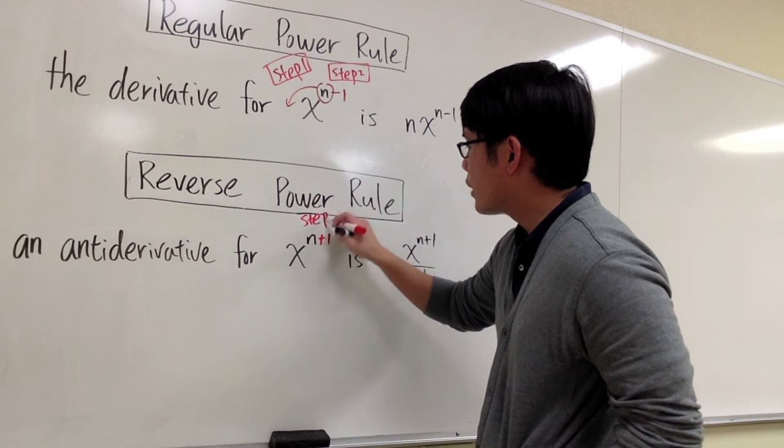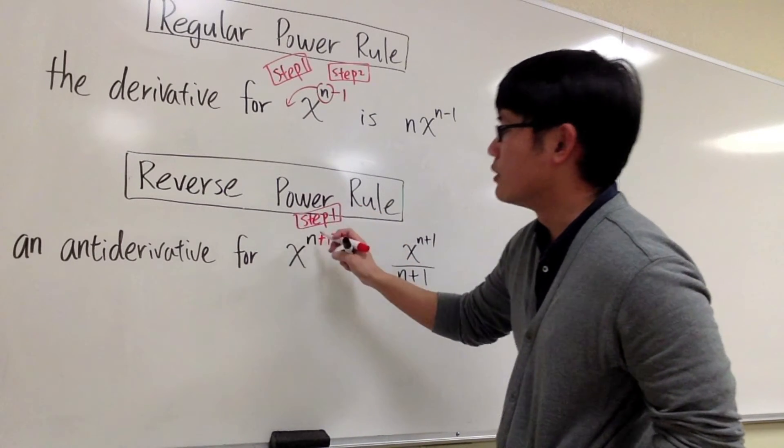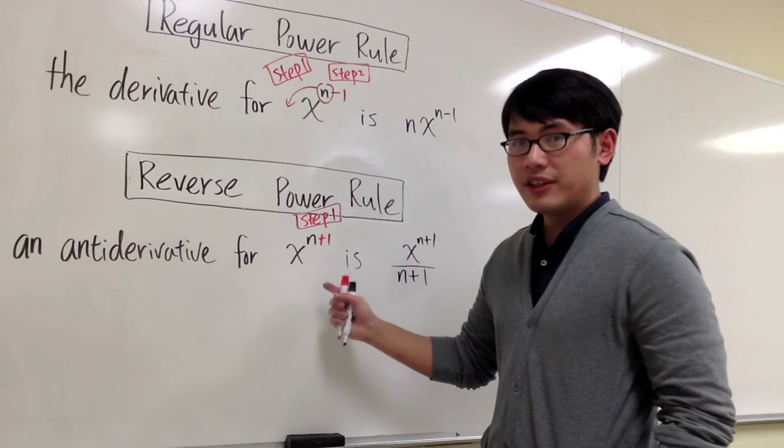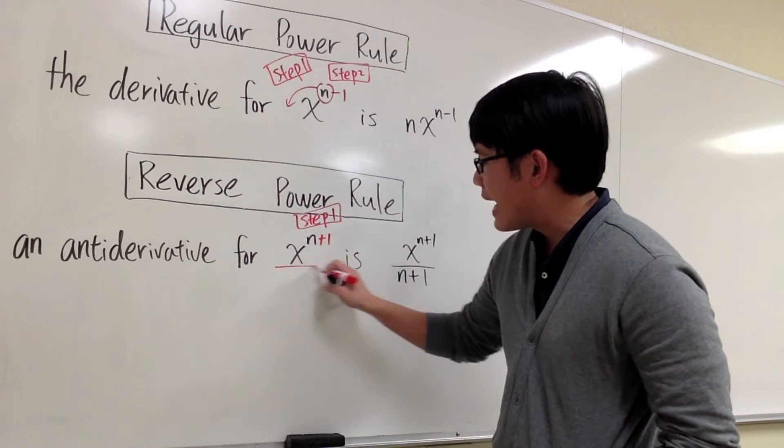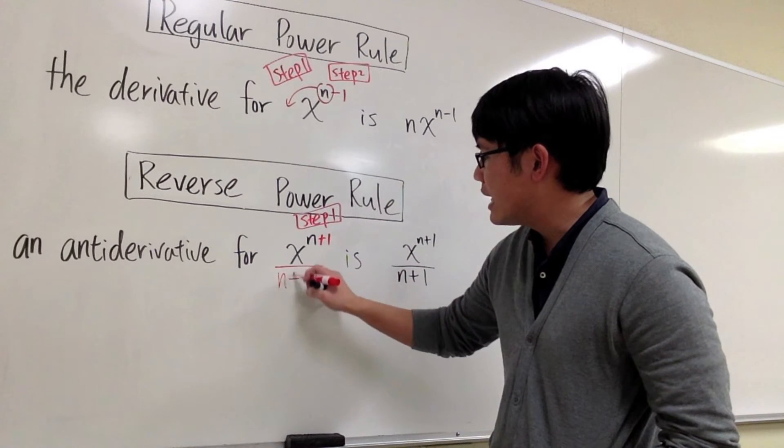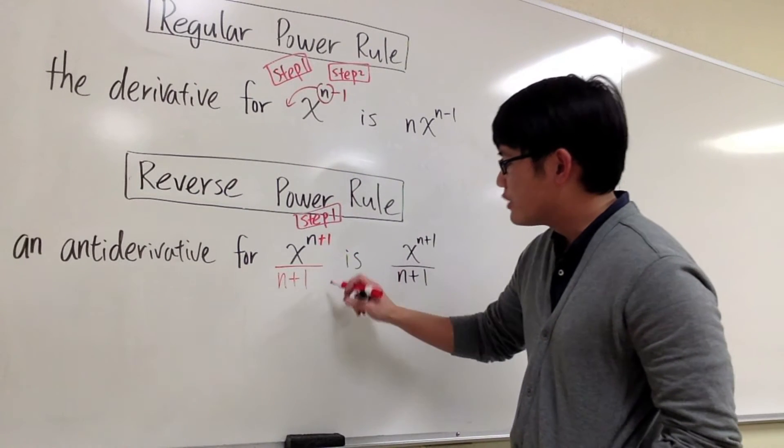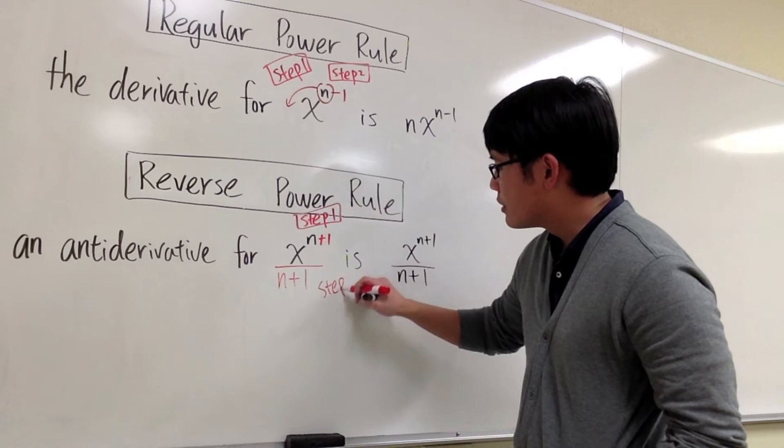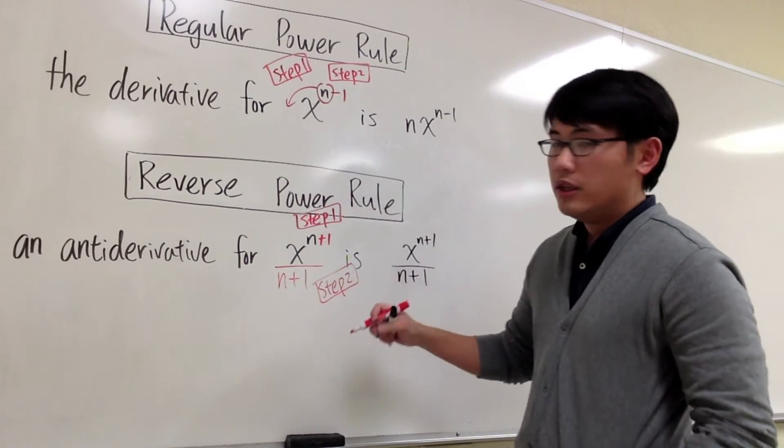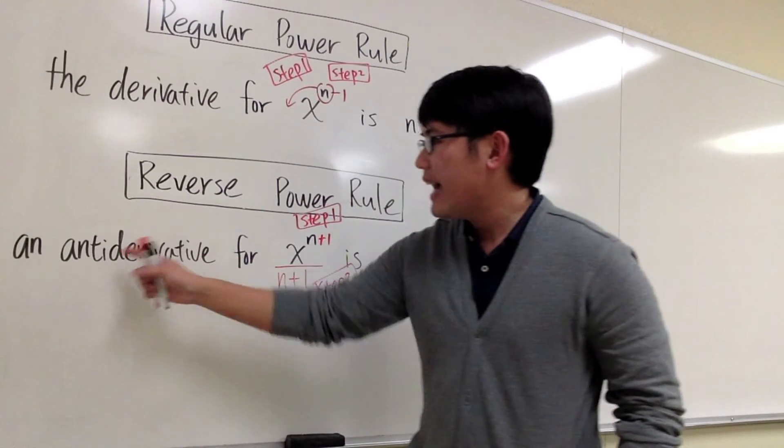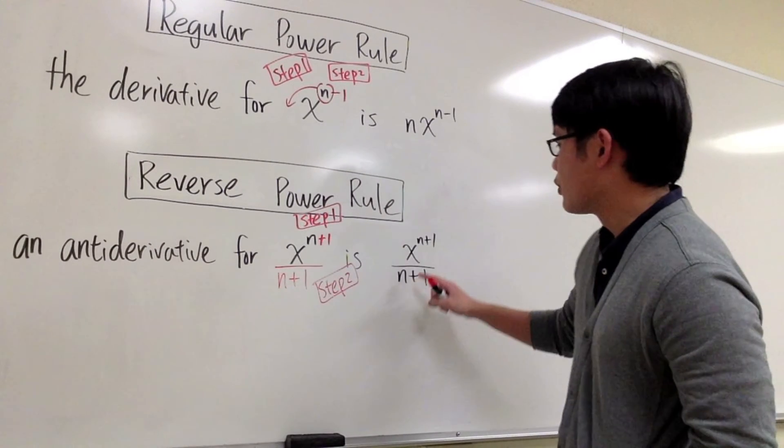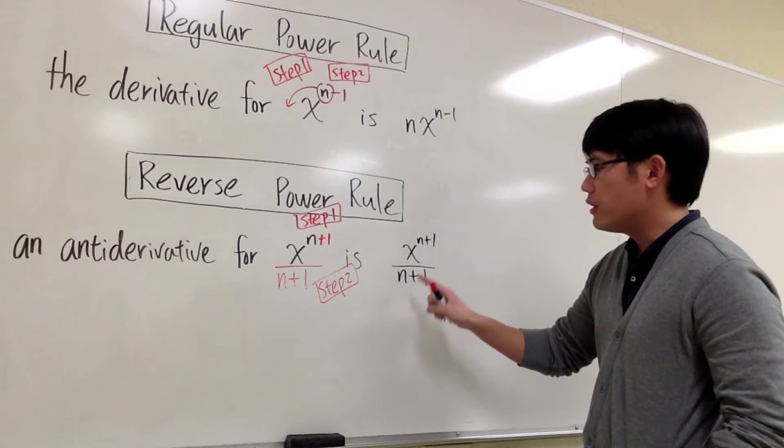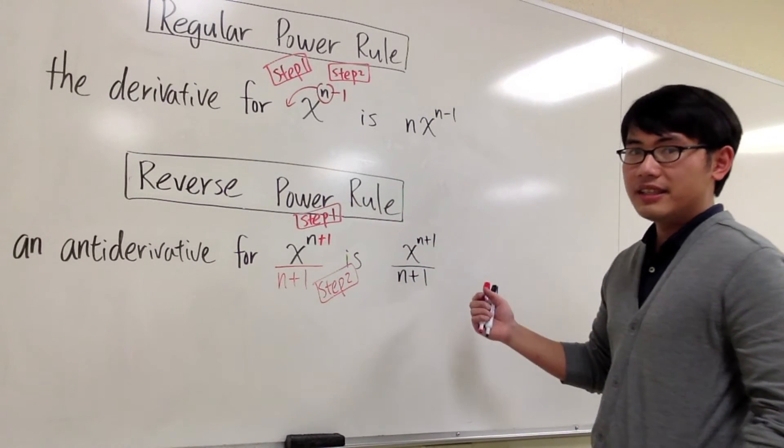it's the first step when you are trying to do the reverse power rule for the anti-derivative. So the next step is, we are going to look at the new exponent and then divide by the new exponent, which is n plus 1. And this right here is step 2. So what we are saying is, an anti-derivative for the function that's in the form x to the n power is going to be x to the n plus 1 over n plus 1. And this is it.